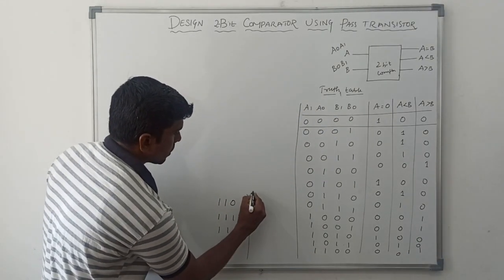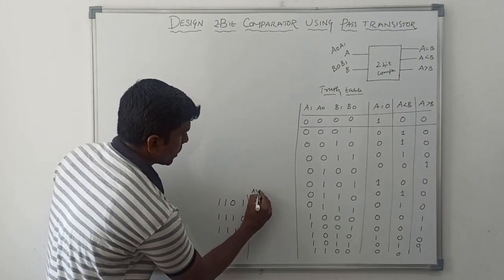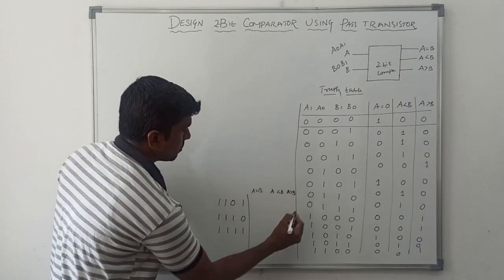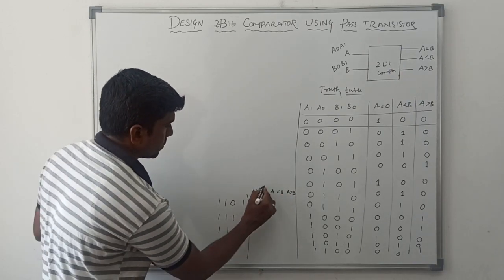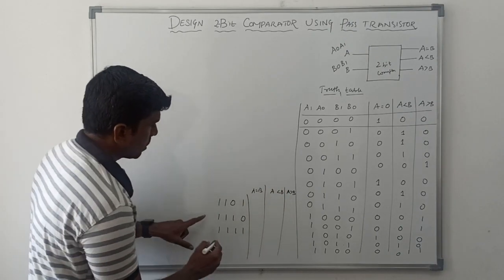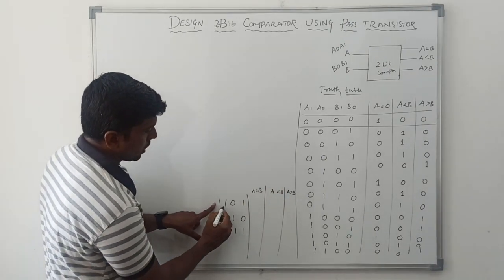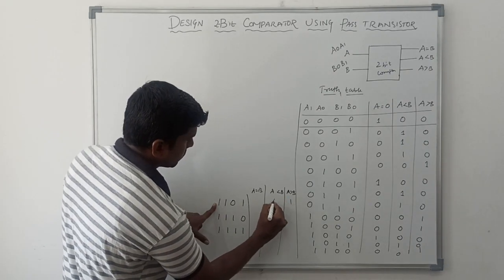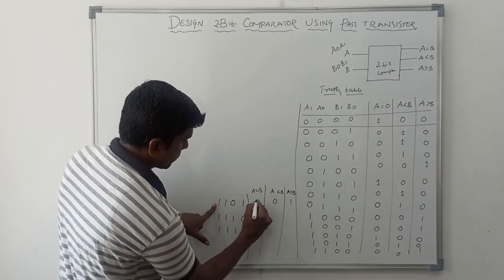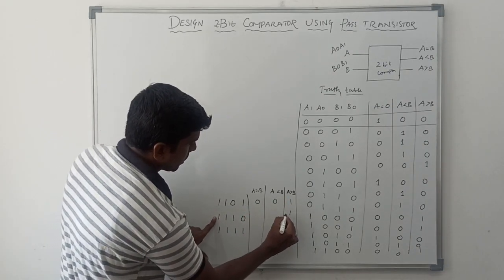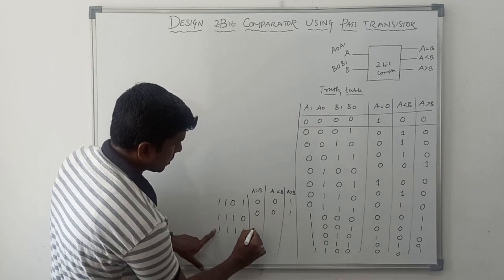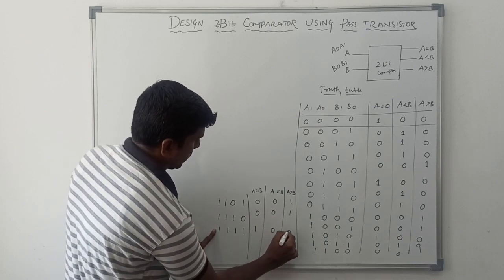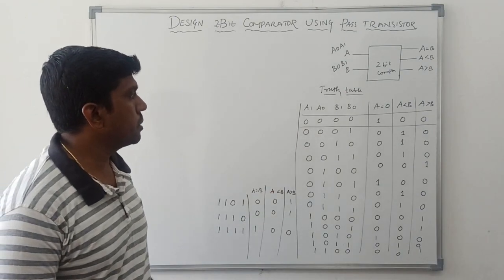Then A value 0,0,0,0 — A equal to B. And A less than B. A greater than B. Here A value is 1,1 and B value is 0,1, so A is greater than B. Then A greater than B. In this case A equal to B. This is the truth table.